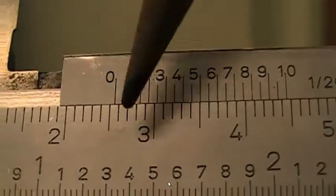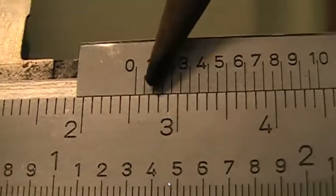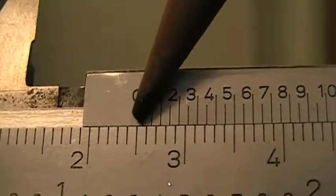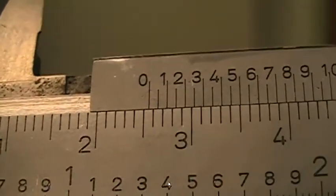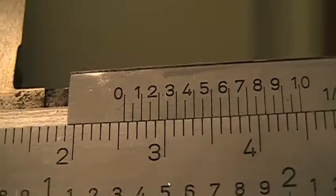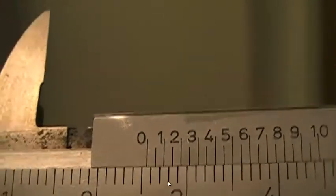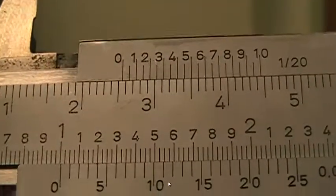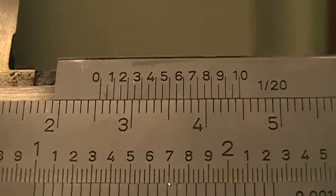Well, if you estimate, it looks like it's about halfway between the 2.5 and the 2.6. So you might say that reading is 2.55 and just leave it at that with two significant figures. But this vernier device lets us get another significant figure. Here's how.